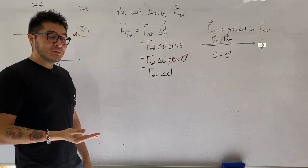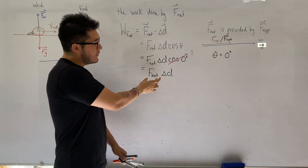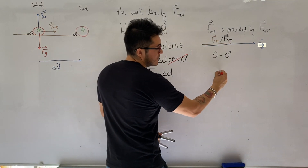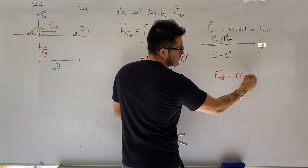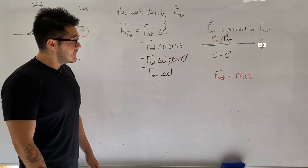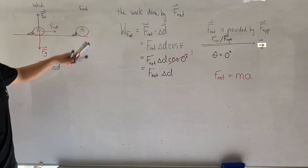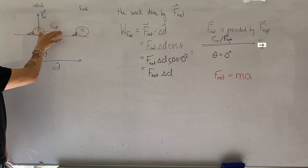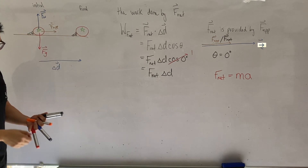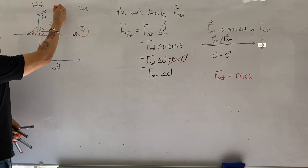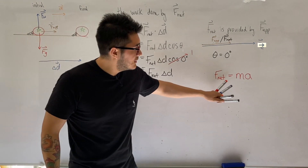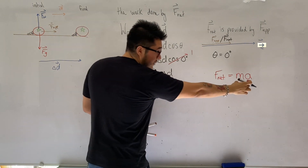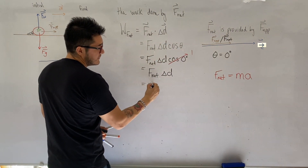Our goal is to derive the work-kinetic energy theorem, so we're going to borrow from the second unit on Newton's second law. From the second law we found that the net force on an object equals mass times acceleration. In this case, if the tomato is moving to the right, there is a net force, and if there is a net force there must be an unbalanced force — meaning the acceleration is also to the right. So we can replace F_net in our formula with mass times acceleration.